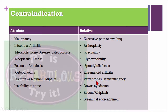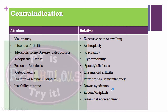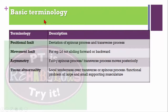Further relative contraindications include rheumatoid arthritis, vertebrobasilar insufficiency, Down syndrome, recent whiplash injury, and ligamentous laxity. We cannot give spinal mobilization in these cases — especially in vertebrobasilar insufficiency, where the patient may get drop attacks, and in Down syndrome due to ligamentous laxity.